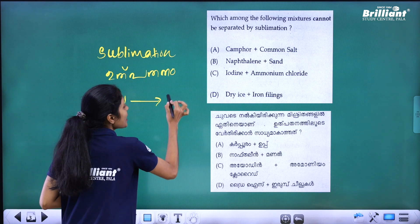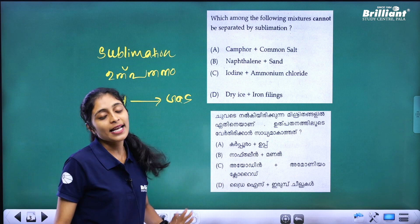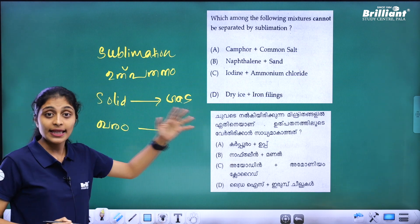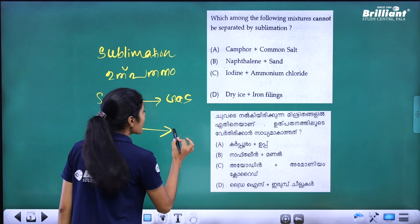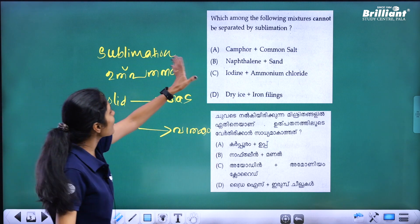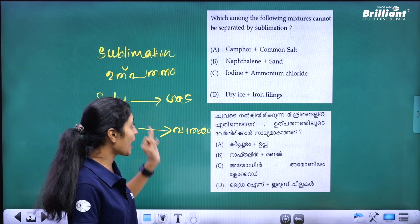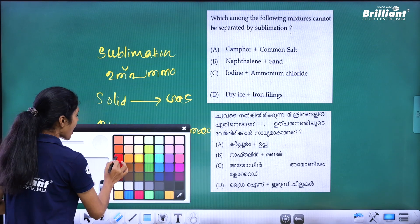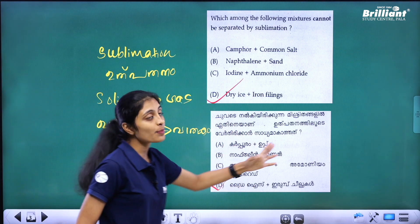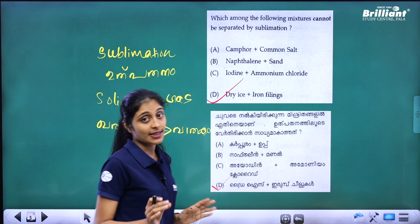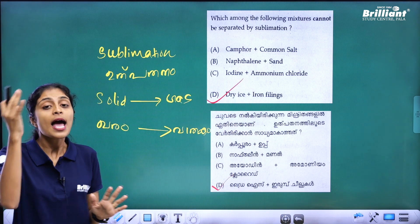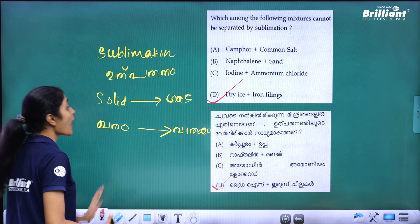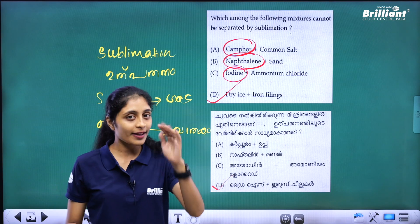Camphor, naphthalene, and iodine all undergo sublimation. So if you look for the mixture that cannot be separated by sublimation, option D — dry ice plus iron fillings — is the answer, because iron fillings can be separated by magnetic separation, not sublimation.